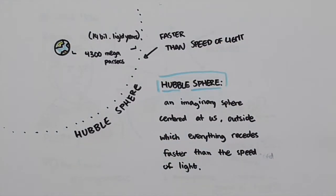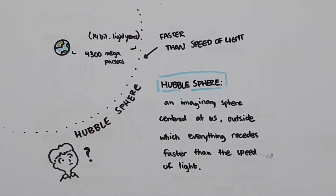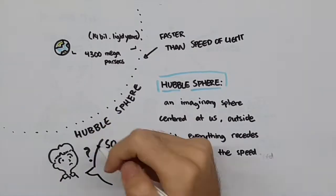So from this, we can easily conclude that we would not be able to see anything beyond the Hubble sphere, right? Well, it's actually not that simple.